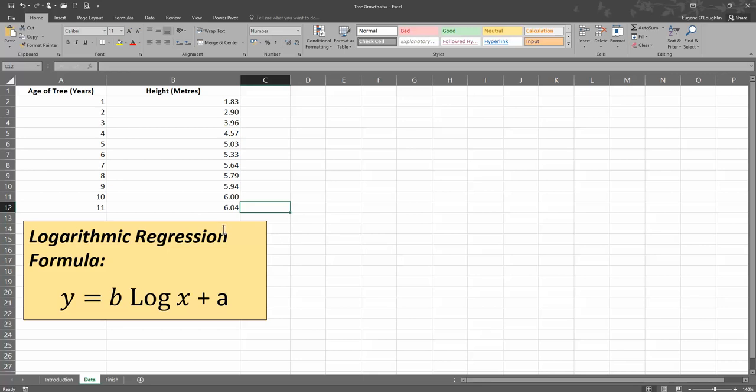We have a logarithmic regression formula here at the bottom. I'll come back to that. But we want to use logarithmic regression to help make this forecast. So we want to make the forecast of what is the height, that's our dependent variable y, based on our independent variable x, which is the age of the trees.